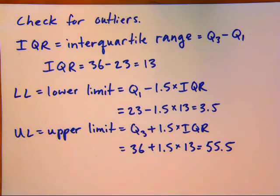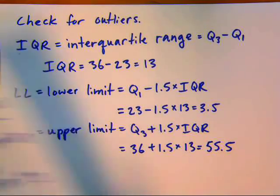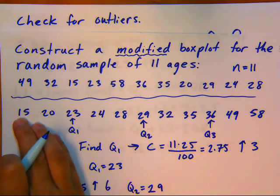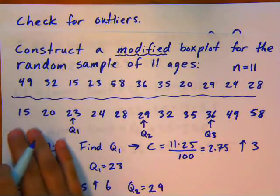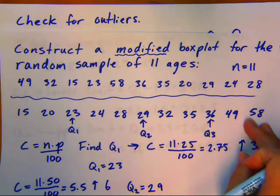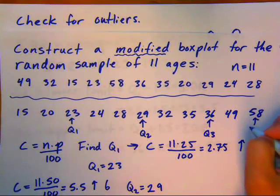So if I go back to my original data, if you have it in order when you're going through, you can quickly see that I don't have anybody as young as the 3.5 year old mark, so there's no outliers on the left. But I do have one person in here that's older than 55.5. This value here is going to be considered my outlier.